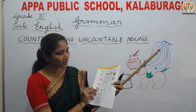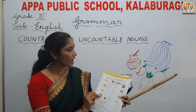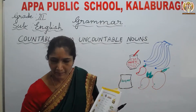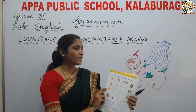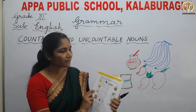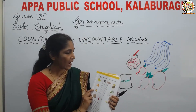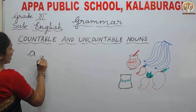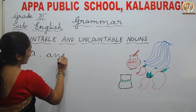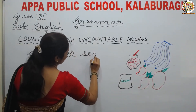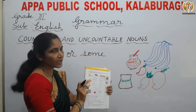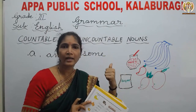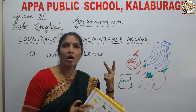In your textbook, on page number 19, you have an exercise: match the words with the pictures, and then fill in the blanks with a, an, or some. Now, how to use a, an, or some? We will learn. Here are the pictures of nouns, and we have to use properly a, an, or some.